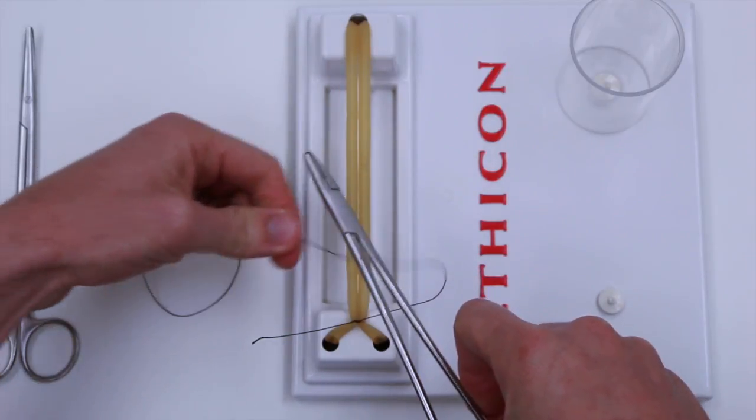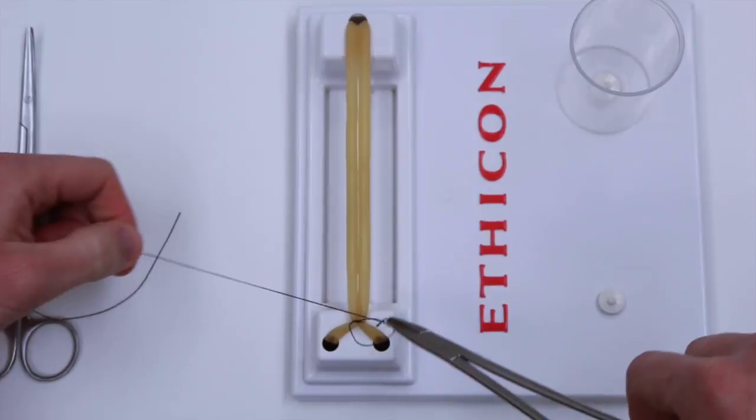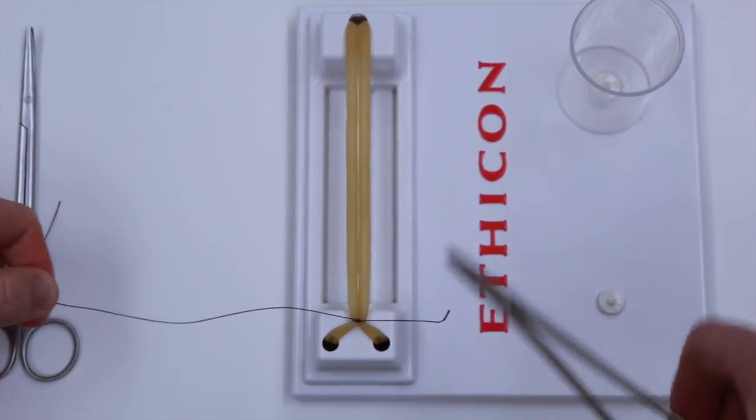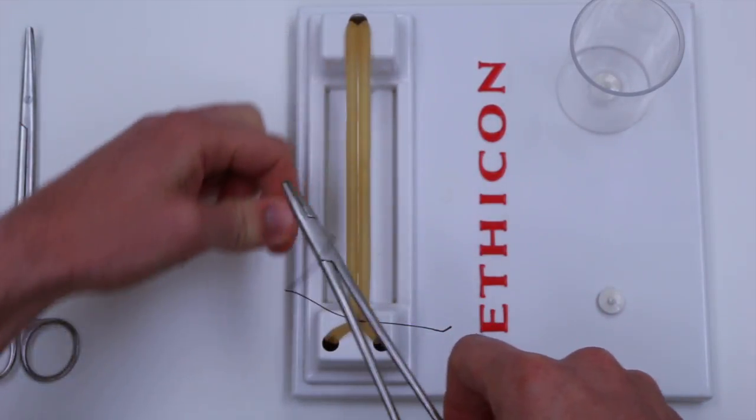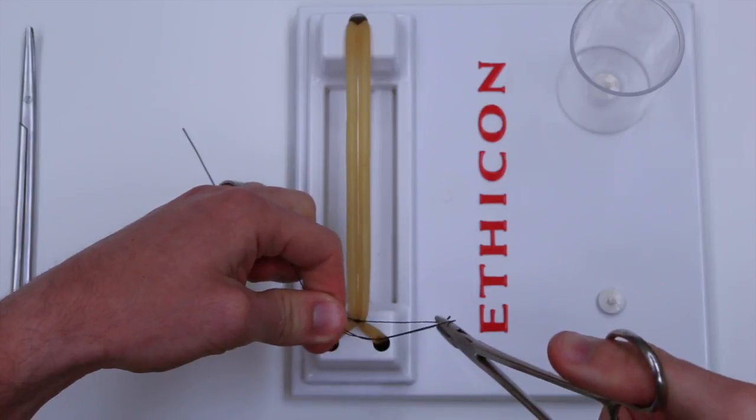So instrument over the wound, wrap once, grab the tail, pull through. Over the wound, wrap once, and grab the tail.